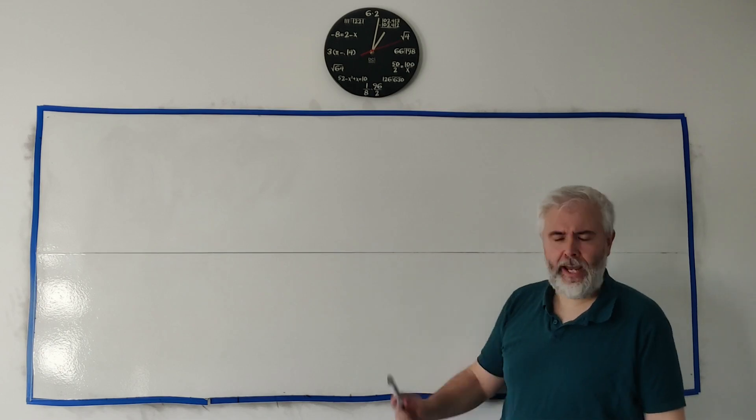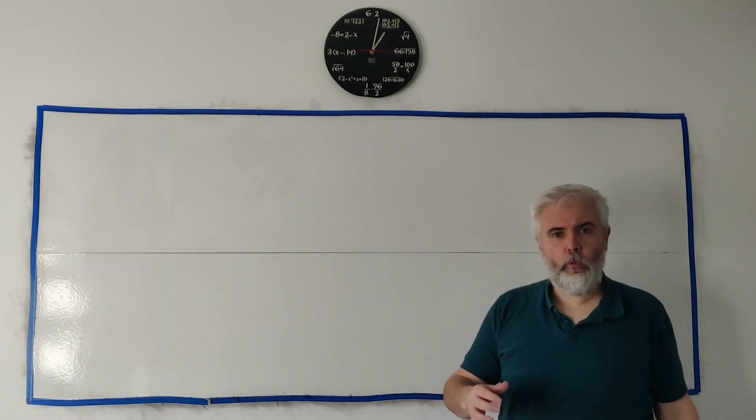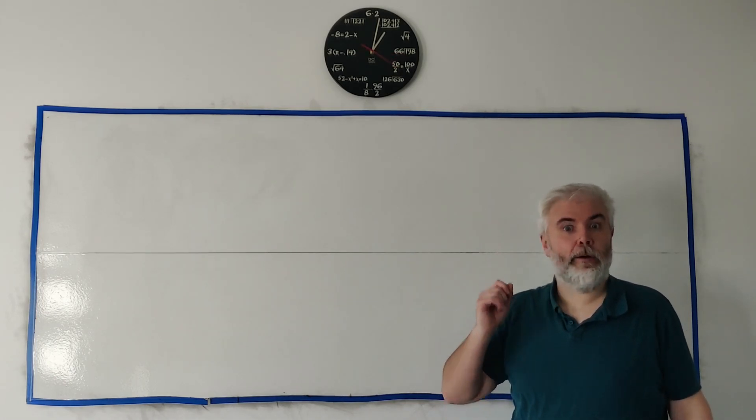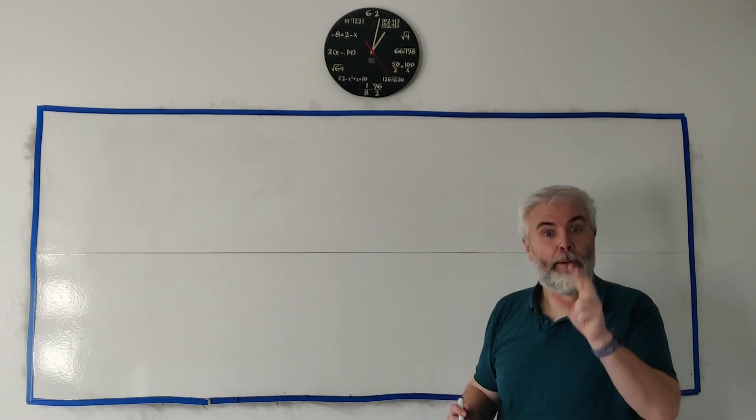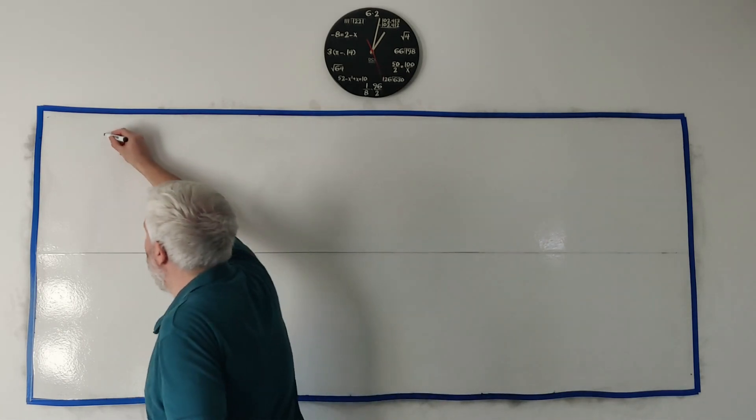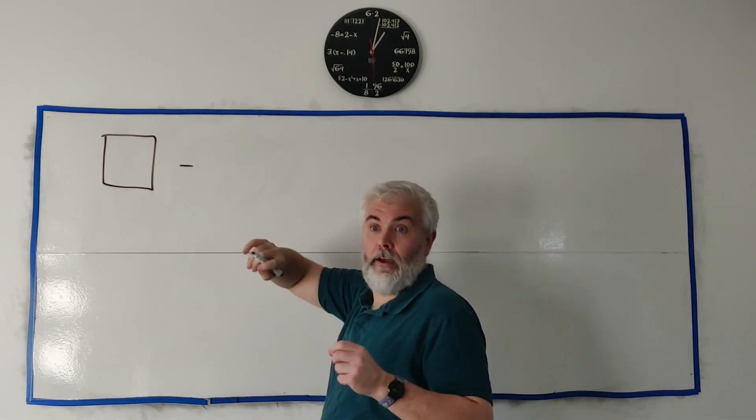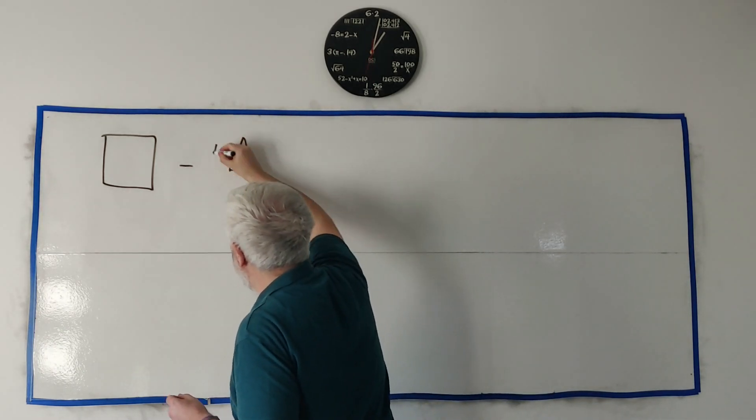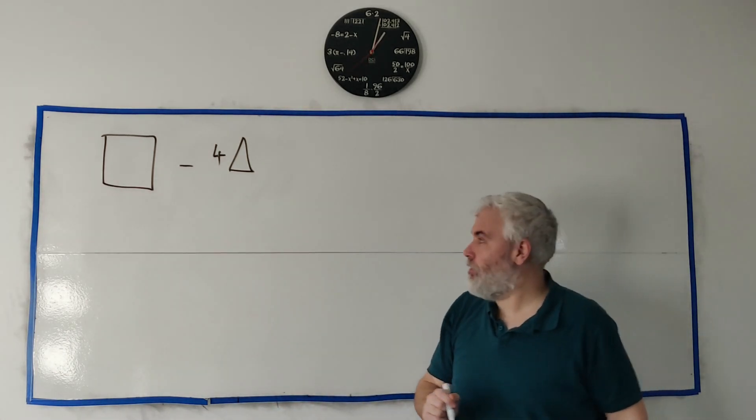The blue area we're asked to find is a very irregular shape, and often when we're asked to find irregular shapes like that, it's much easier to find them as a composite of regular shapes. What I mean by that is the blue area could be found by getting a square and taking away four triangles.